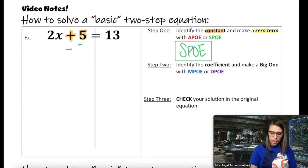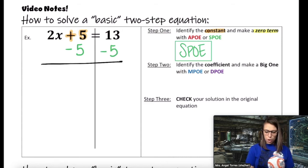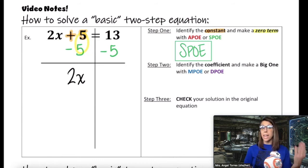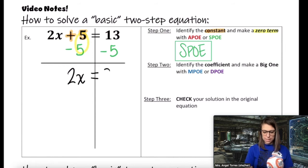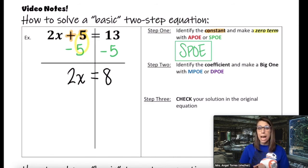So I subtract 5 from both sides. SPO says I have to subtract it from the other side as well. 5 minus 5 becomes zero, so we're left with 2x on the left. We don't need to include that zero anymore. And 13 minus 5 is 8. Notice here, x is not by itself, but the variable term 2x is now by itself, so we can move on to step two.